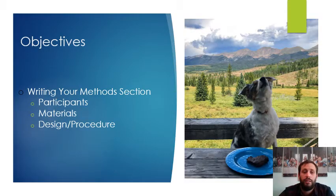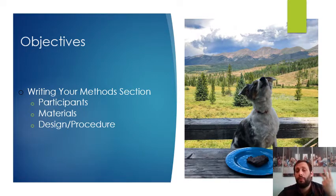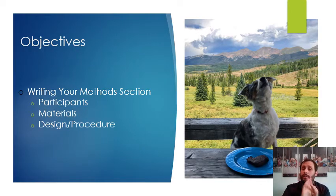For our objectives today, all we're going to be talking about is how we write a methods section. And within a methods section, we have three essential pieces that we need to abide by. In a methods section, there's always writing about participants, your materials, and your design or procedures. Oftentimes, there's more than that to a methods section, but these are the three basic components that you need to talk about in a methods section.